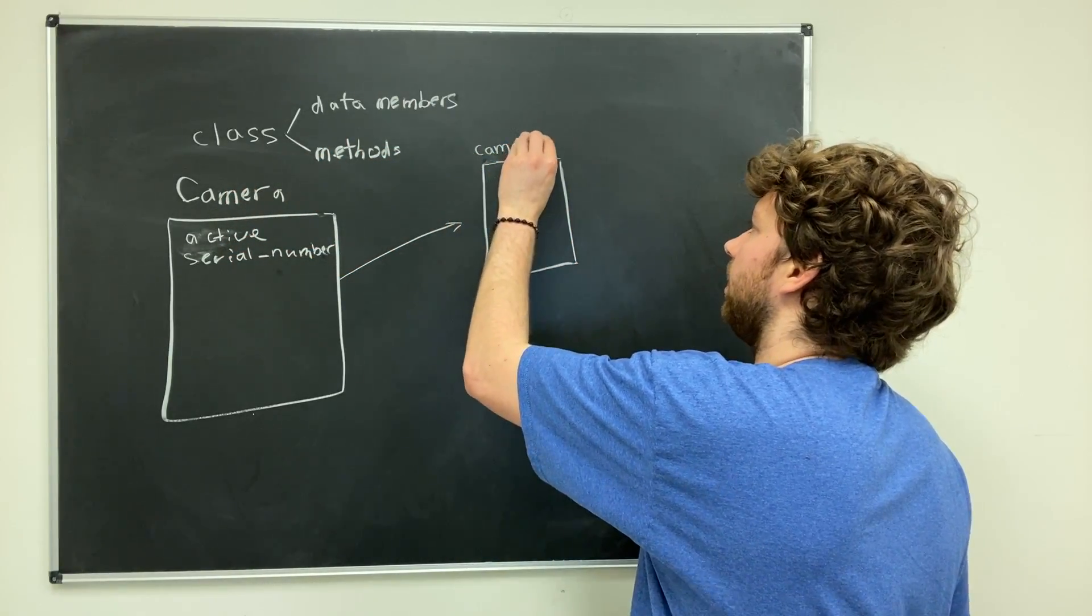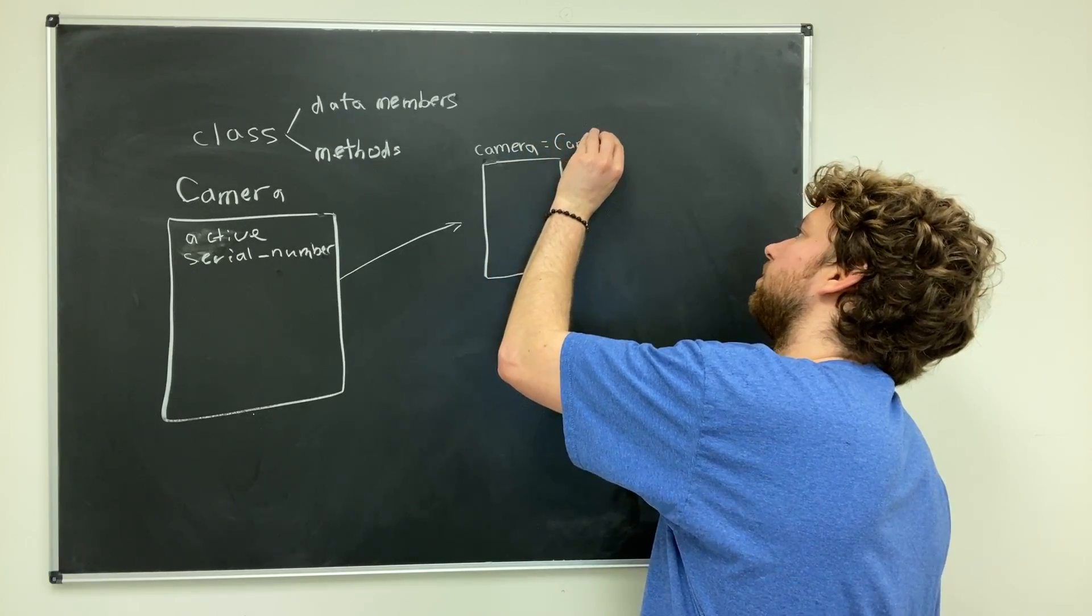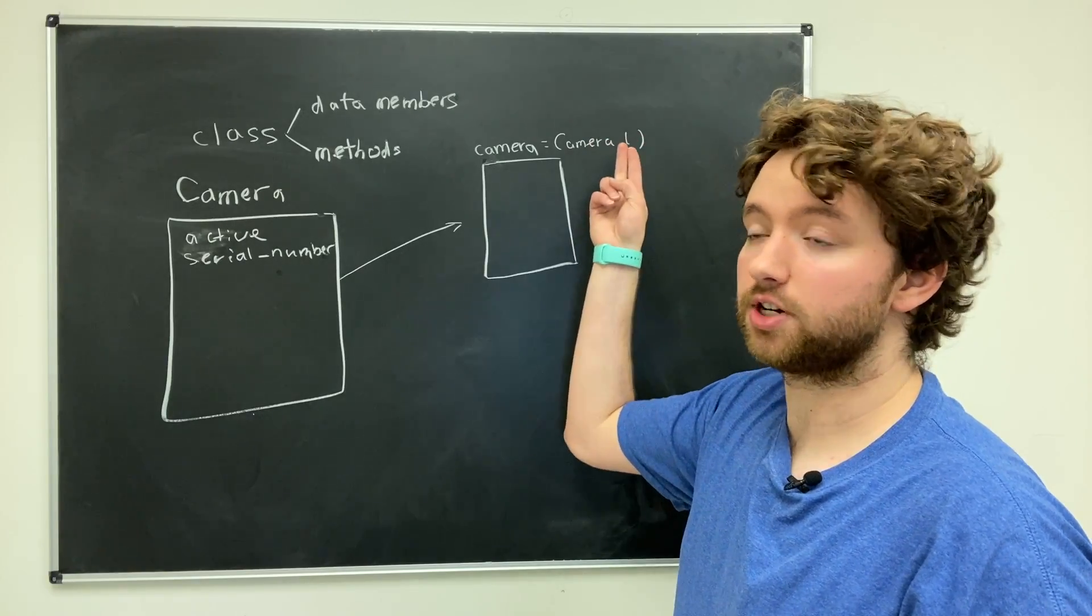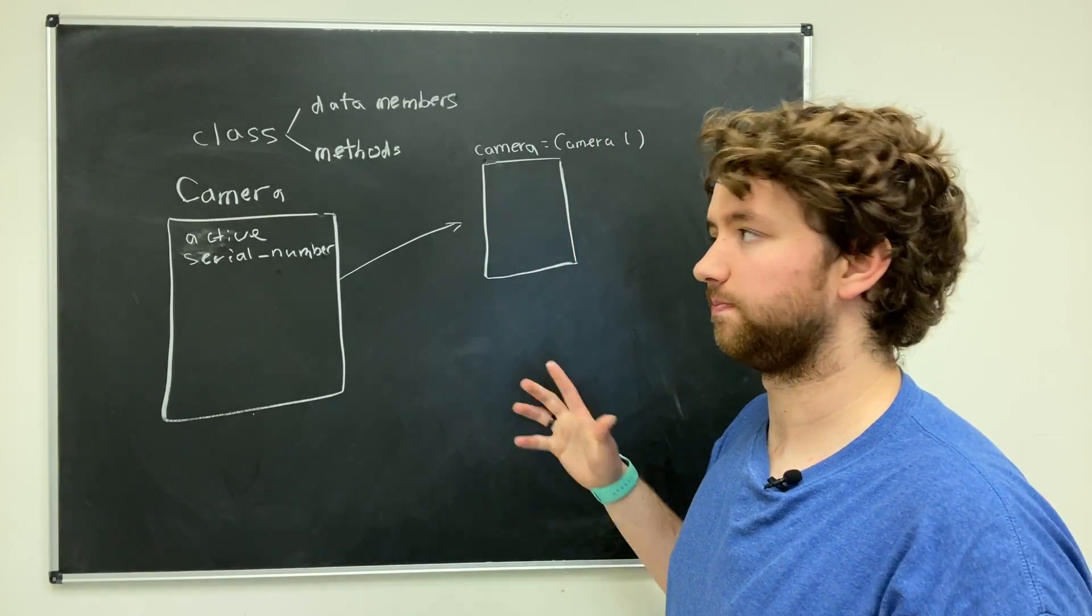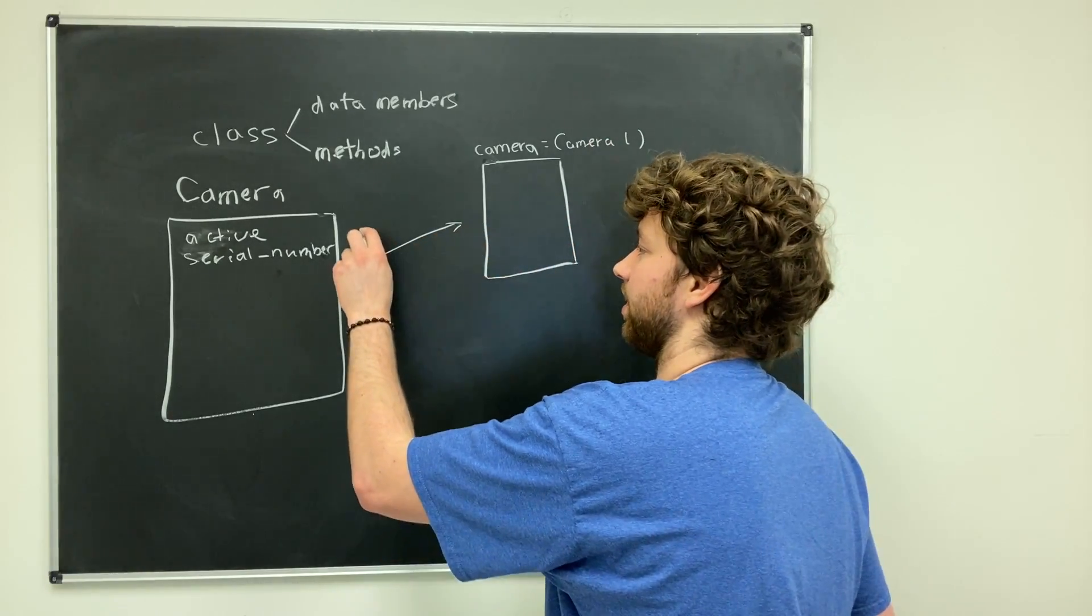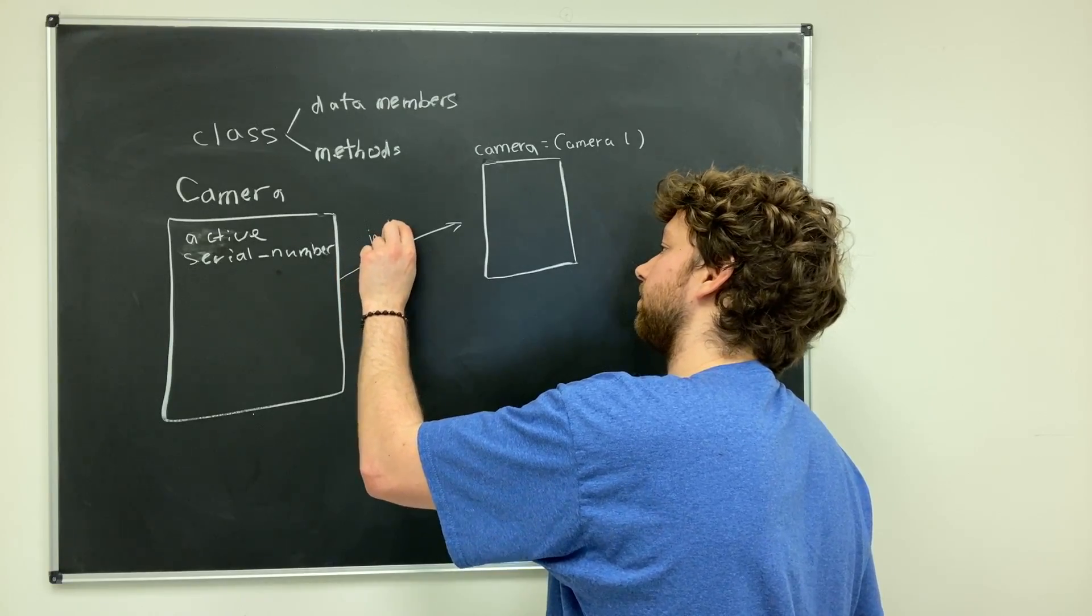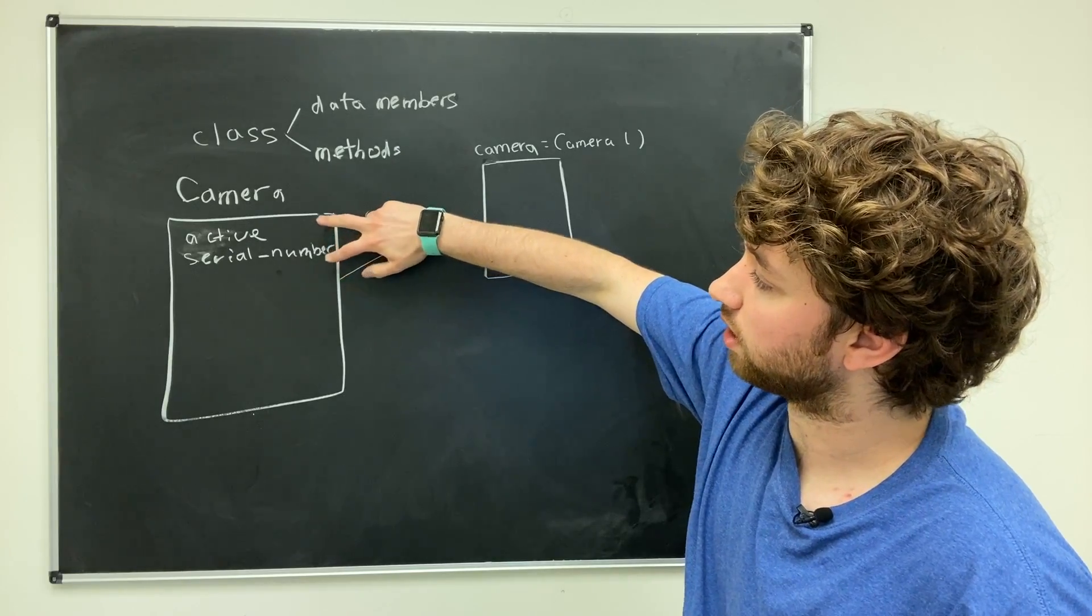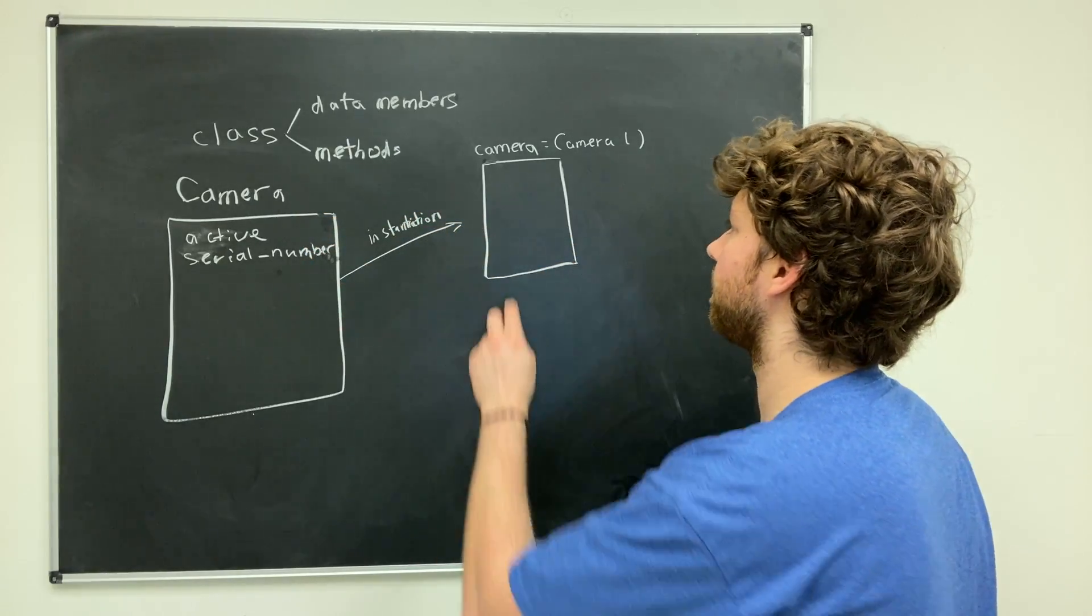Then you just say the class name with parentheses after. That is how you instantiate an object. This process is known as instantiation, and inside of this object we give specific values for these different variables here.